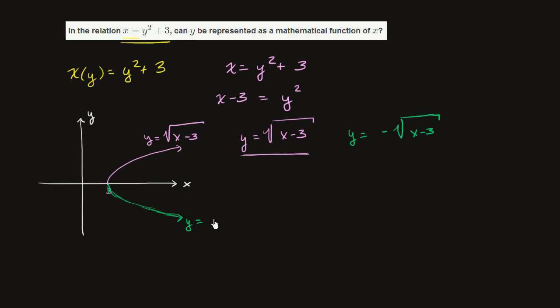And this right over here, this relationship cannot be, this right over here is not a function of x. For a given x, in order to be a function of x, for a given x, it has to map to exactly one value for the function. But here you see it's mapping to two values of the function.